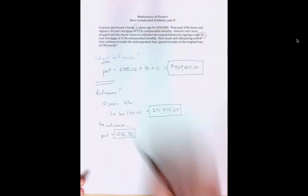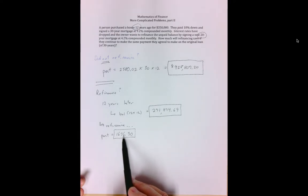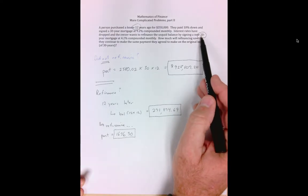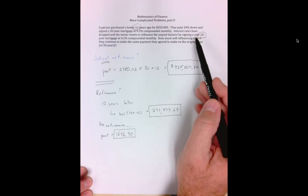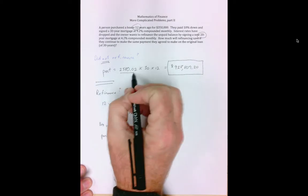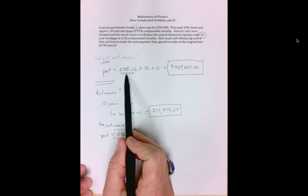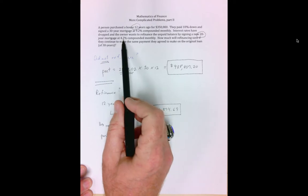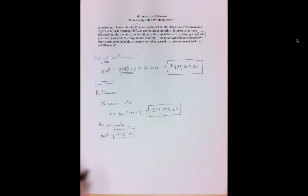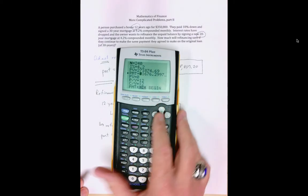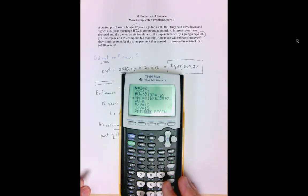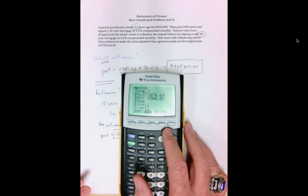Alright gang, so here's what we have. After 12 years, we decide to refinance. The bank tells us we owe $271,874. They'll tell us we'll need to make payments of $1,676.30 for the next 20 years. But we don't want to do that. We want to keep this original payment. We want to have the discipline to continue paying the higher payment because we know that we're going to get our new loan paid off earlier. Well, how much earlier? Well, let's figure it out.